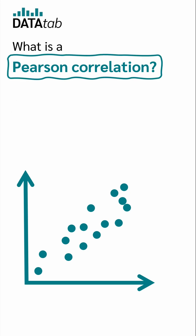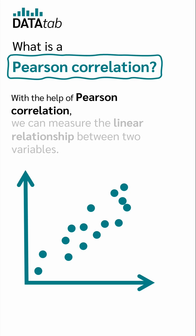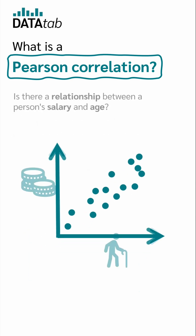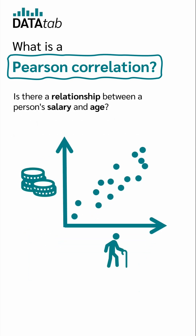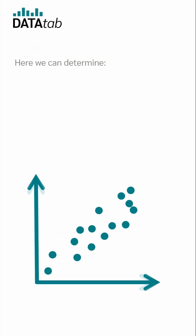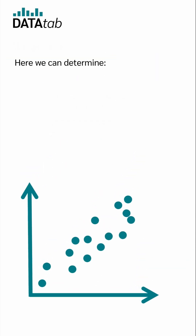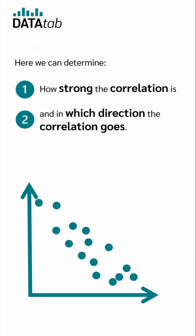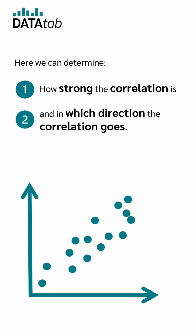What is a Pearson correlation? With the help of Pearson correlation, we can measure the linear relationship between two variables. For example, is there a relationship between a person's salary and age? Here we can determine how strong the correlation is and in which direction the correlation goes.